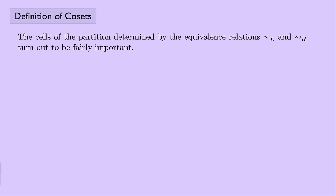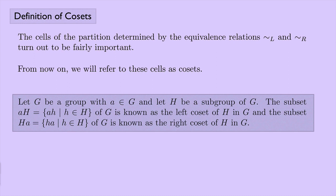The cells of the partition determined by the equivalence relations — left and right — turn out to be very important; we'll use them a lot in abstract algebra. From now on, I'll refer to these cells as cosets. Here's the definition: let G be a group, A an element of G, and H a subgroup of G. The subset AH — meaning the set of all A times little h's where little h belongs to the subgroup H — is known as the left coset of H in G. Similarly, the subset HA is the right coset of H in G. Keep in mind this is notation: little a and big H represents a left coset, and reversed it gives the right coset. In later videos we will see how cosets end up being really important in abstract algebra.